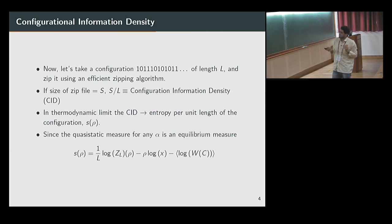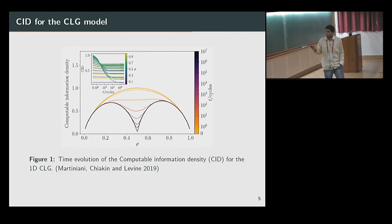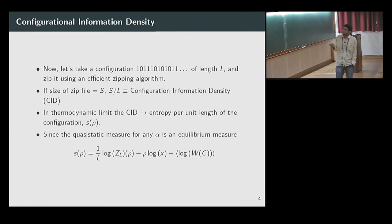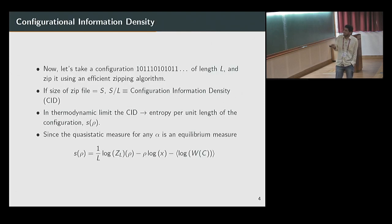The weight of a configuration is like the free energy — it's like free energy minus rho times chemical potential. X is the fugacity — the weight of a particle. This is from Martiniani, Chaykin, and Levin (2019), who did this for the CLG model. They start with a random initial condition and let the system evolve, and you see that this CID, which is like the entropy, shows a cusp at the transition.